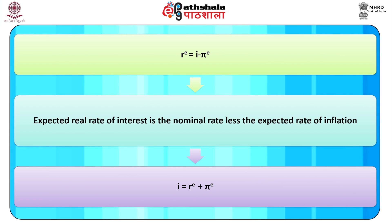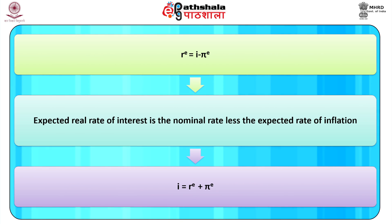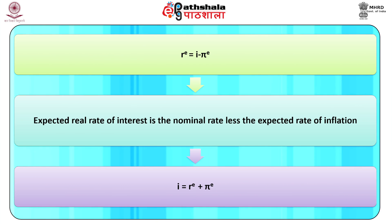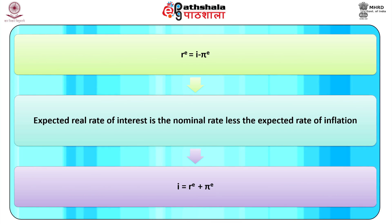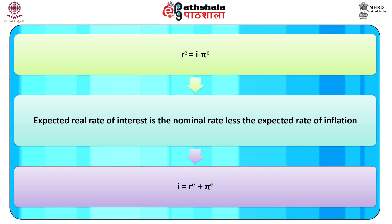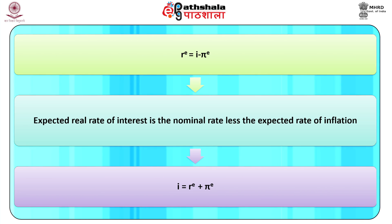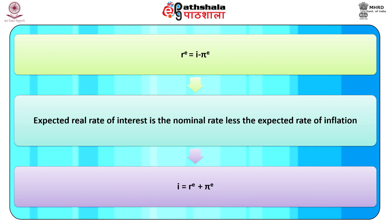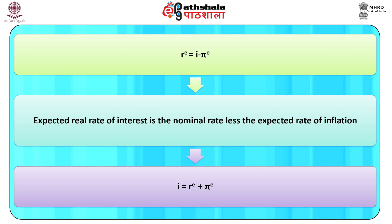The nominal interest rate is the rate that the bank pays to its customer, whereas the real interest rate is the change in the purchasing power. Thus, the expected real rate of interest equals the nominal rate minus expected inflation. According to Fisher, the equation implies that the nominal rate equals the expected real rate of interest plus the expected inflation rate.